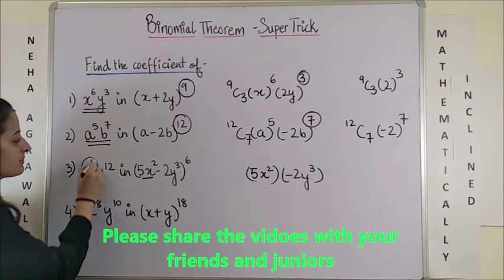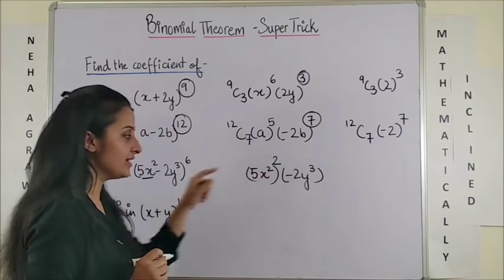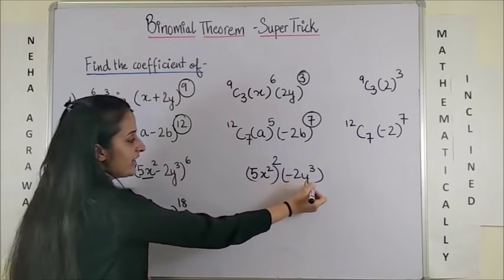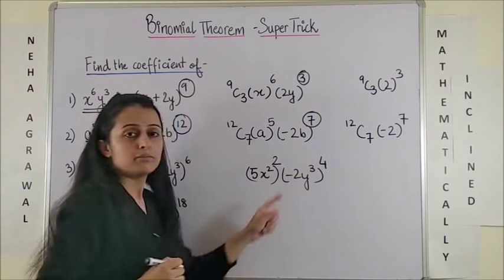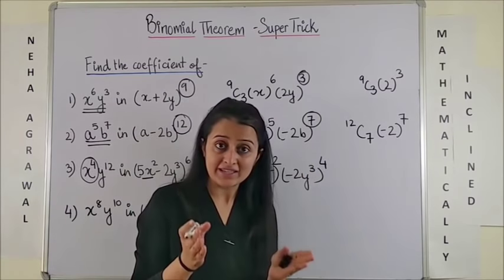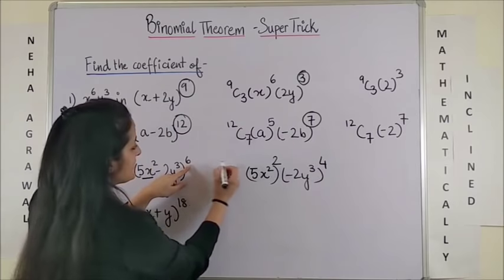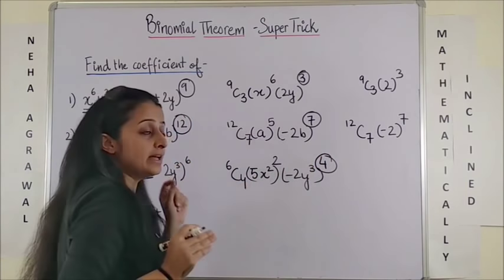We need x raised to power 4. It's already squared. So I just have to square over here so that the overall power of x is 4. Similarly, I already have y cubed and we need 12. So I need to put 4 because 3 into 4 makes it 12. Now, this means further 6 is the power 6c and I use the second power 4.